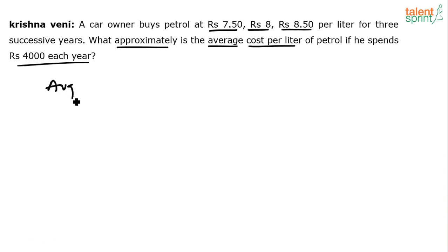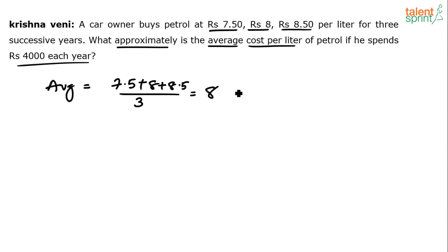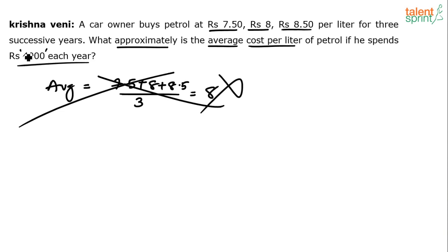You may feel that the average can be taken as (7.5 + 8 + 8.5) / 3, which is 24/3 = 8. That is absolutely wrong. This is not the way to find the average, because while the amount spent each year is the same, the quantity he gets every year differs.